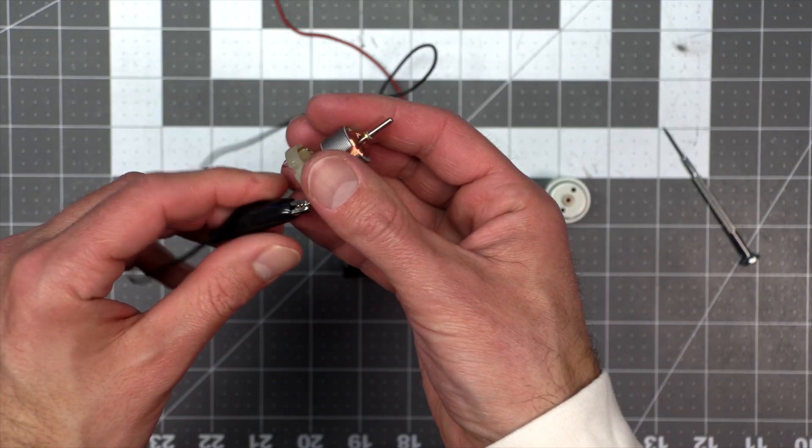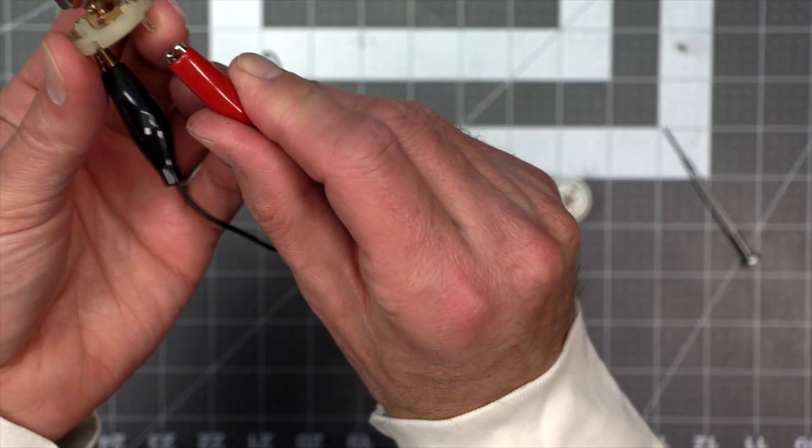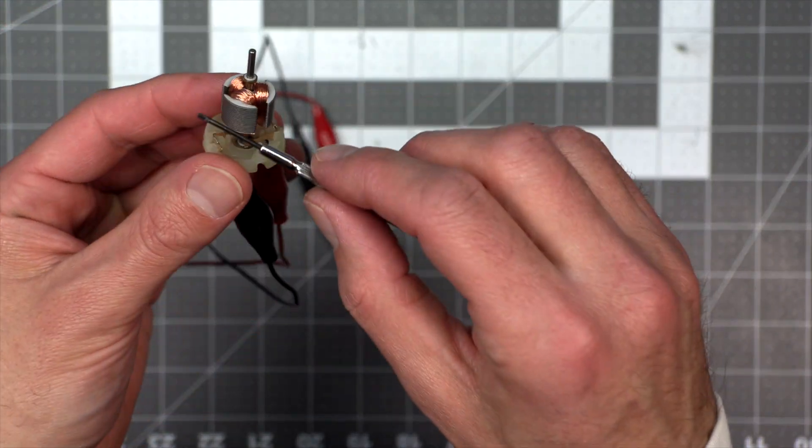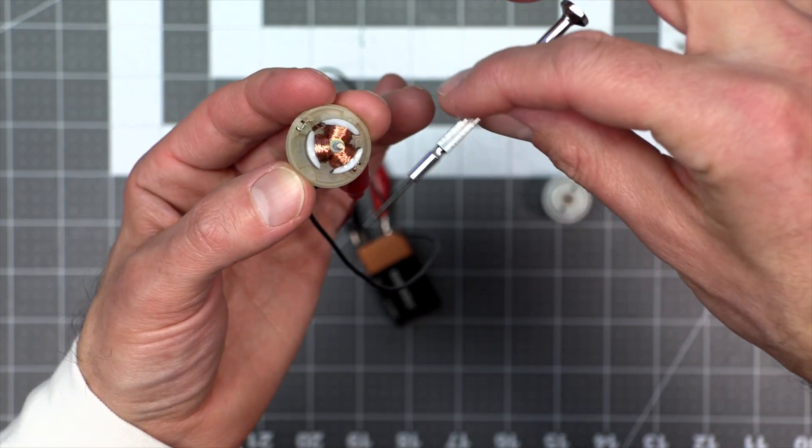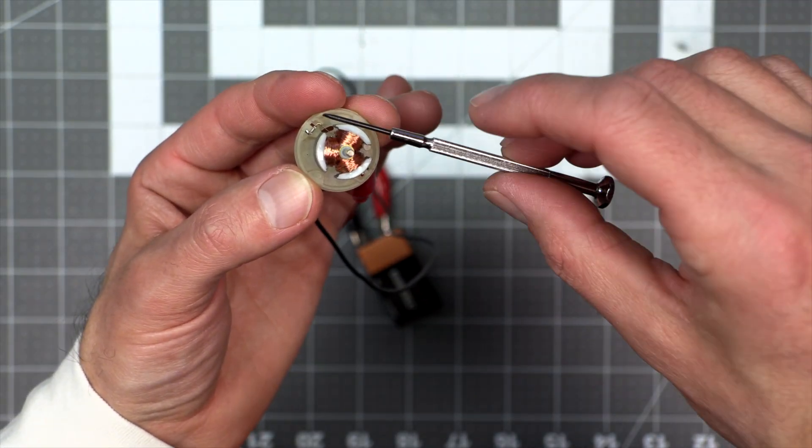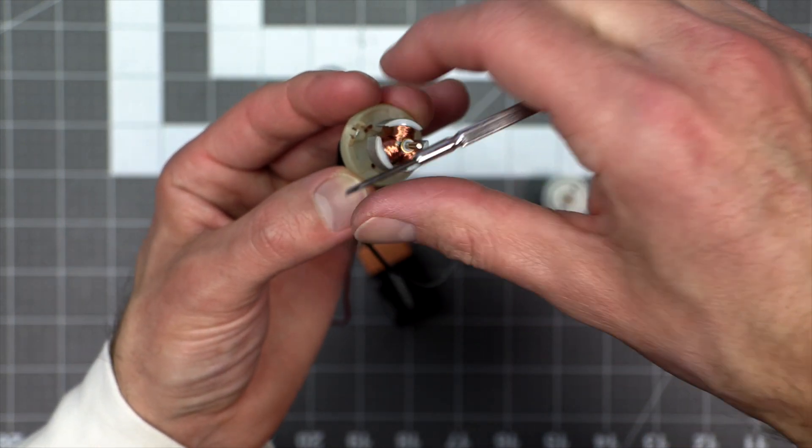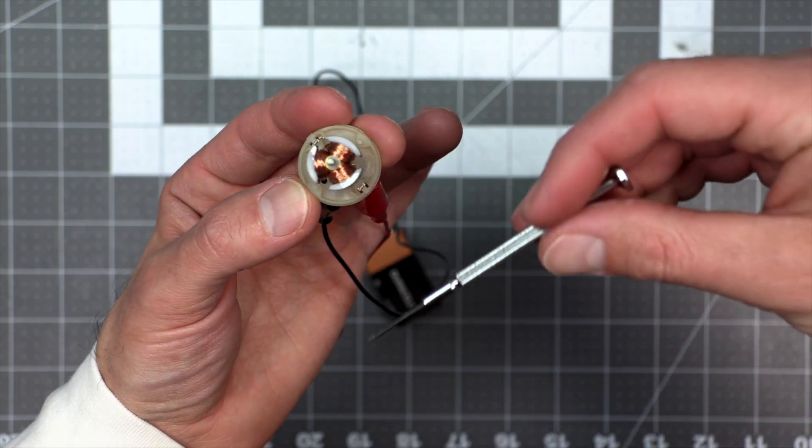If you assemble the motor, except for the stator with the permanent magnets in it, you can attach it to a battery and test which armature is receiving electricity, and thus turned into an electromagnet. If you spin the rotor, you'll notice that there's only one electromagnet charged at a time, and if you spin it, it'll be a different electromagnet, but in the same position. This is all thanks to the design of the commutator, which has gaps, and is only providing electricity to one electromagnet at a time.